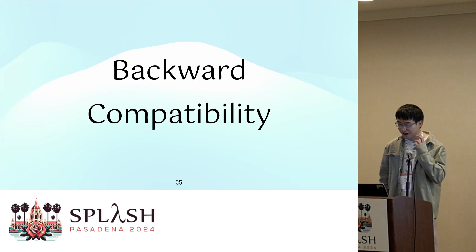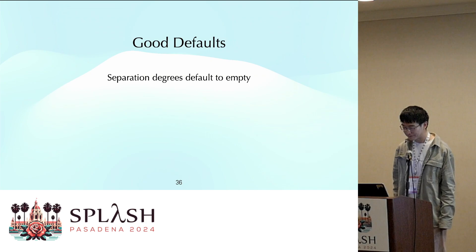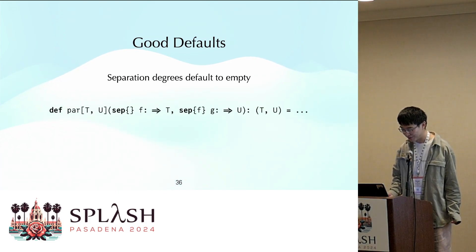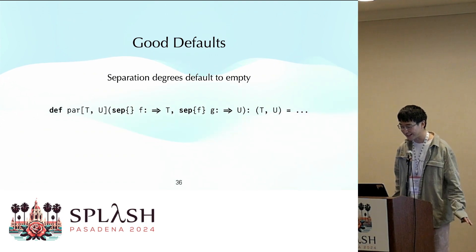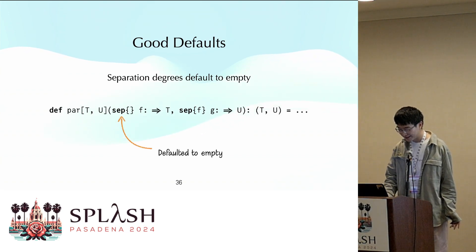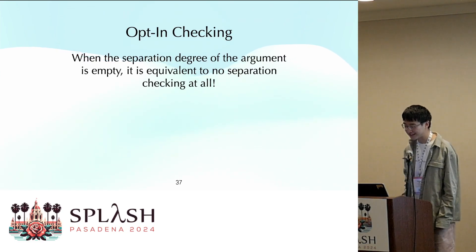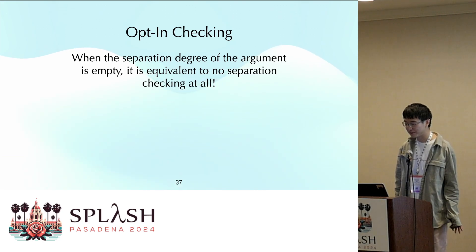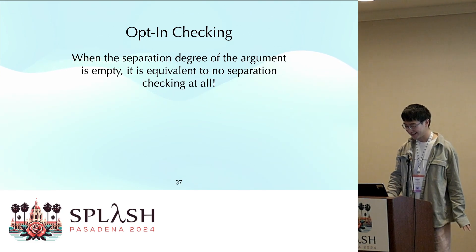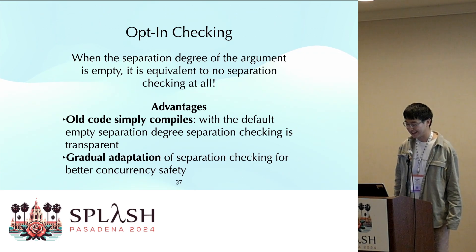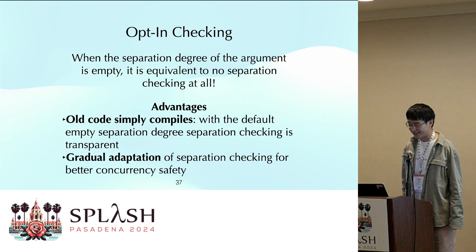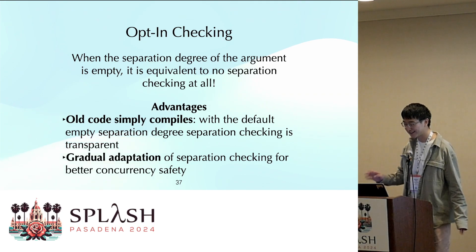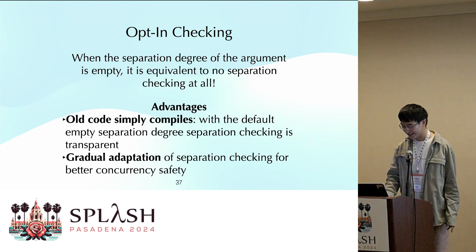Now let's talk about how our approach achieves better compatibility. First, we have good defaults: although we add the new concept of separation degrees, the default is empty. So in the previous example, if the separation degree of F is not specified, it will be empty. Second, opt-in controlling: when a parameter has an empty separation degree, separation checking is trivial — essentially no separation checking whatsoever. Old code without additional annotations will just compile, since by default separation degrees are empty. One can always add more annotations for better safe concurrency guarantees.